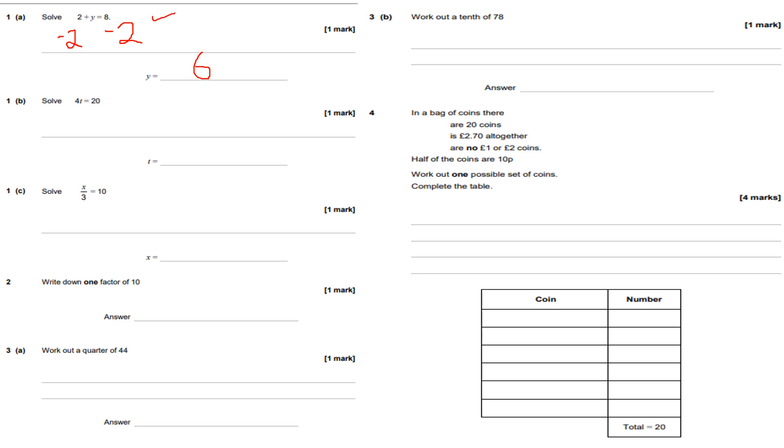For part b, solve 4t equals 20. 4 times t is 20, so the opposite will be dividing both sides by 4. Divide both sides by 4 to isolate and get t by itself. T will equal 20 divided by 4, which is 5. So t equals 5.